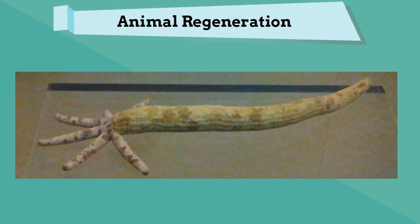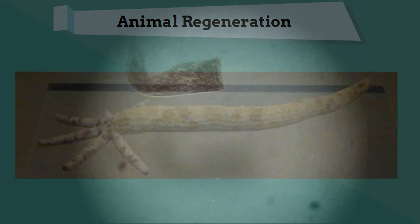Animal regeneration occurs when a new organism grows out of a portion of another organism. In this example, a new starfish is growing from a single leg of another starfish. Planarians can be cut in half, and each new half will grow into two new organisms. Take a look.